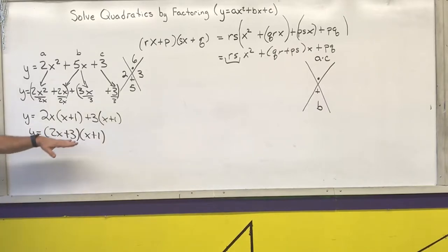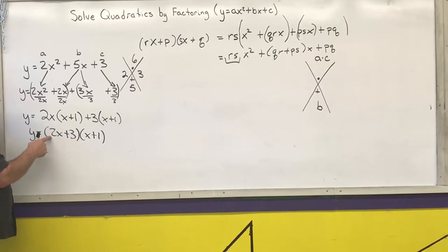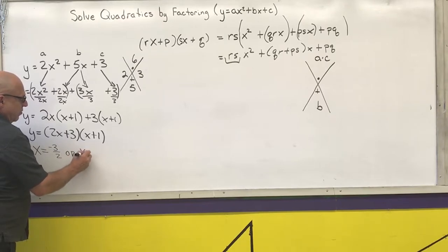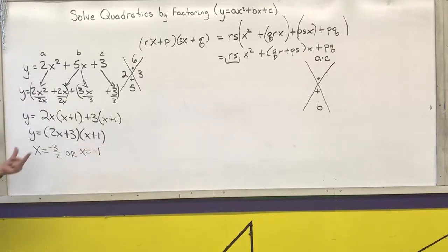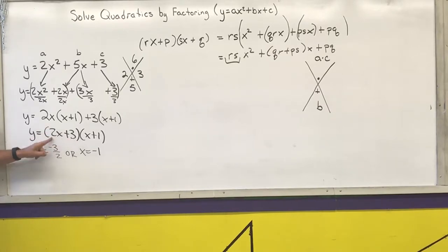Now we can use the zero product property to solve by setting each factor equal to zero. My shortcut: change the sign of the last term and divide by the coefficient of the first term. So x equals negative 3 over 2, and x equals negative 1 over 1, which is negative 1.